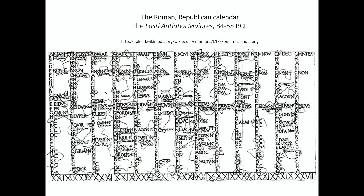But the first calendar in history which is a graphic representation of the civil calendar of the year comes from Rome and is later still. This is from between 84 and 55 BCE, the first Roman calendar that is attested. It comes in the form of a monumental public inscription, and it contains in one piece the whole of the Roman calendar laid out in columns. Each column is a month: January, February, March, April, May, and so on. At the bottom of the column, you have an indication of the number of days in the month: 29 days in January, 29 days in February, 31 days in March.